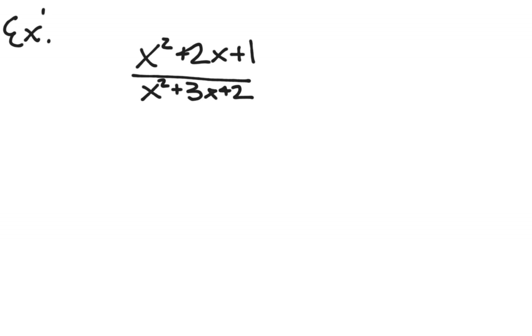Here I have a rational expression. It's just a fraction with a polynomial in the numerator and the denominator. And I want to simplify this rational expression. My first step is to factor each polynomial. I'm going to do that by doing a diamond problem. And I ask myself, what multiplies to 1? Adds to 2. It's 1 and 1.